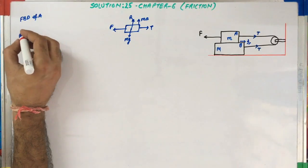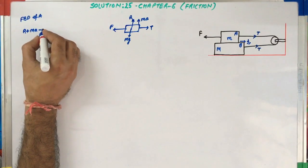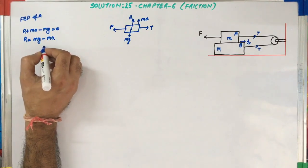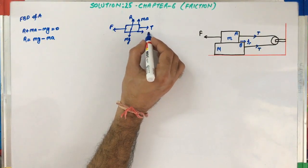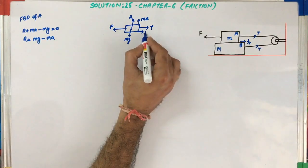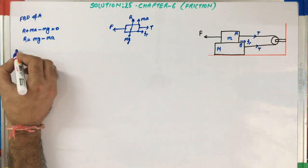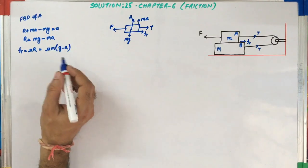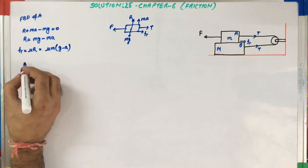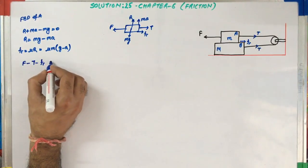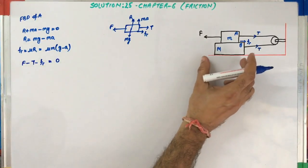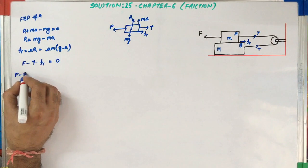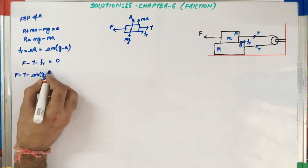For the vertical forces: R plus ma minus mg equals zero, so R equals mg minus ma. The frictional force fr acts in the right-hand direction because the applied force is trying to pull the block in the left-hand direction. So fr equals mu times R, which equals mu times m times (g minus a). For the horizontal motion in case one, where the system should be in equilibrium: F minus T minus fr equals zero, giving F minus T minus mu·m·(g minus a) equals zero.